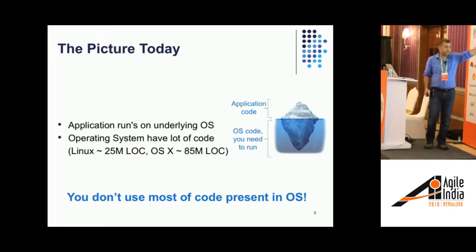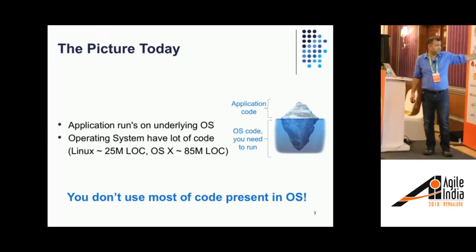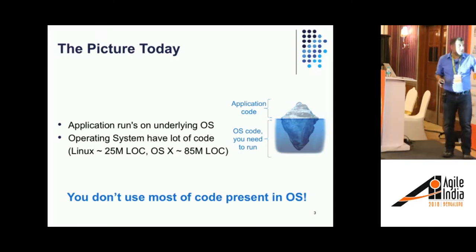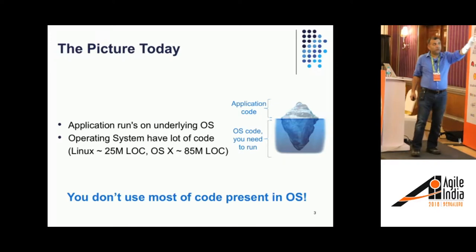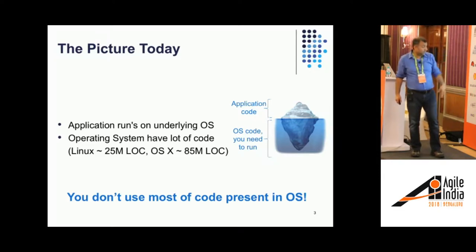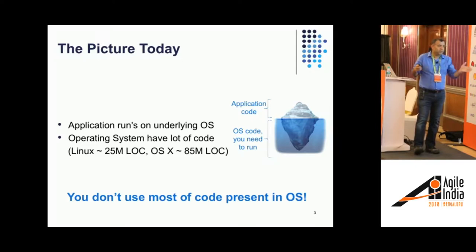Looking at the picture today: you have an application that runs on an operating system. Operating systems are usually a lot of lines of code — Windows is quite big, Linux OS as well — and then you have whole sorts of utilities. This picture somewhat resembles an iceberg. What you care about or what you see is just the tip. There is really big, bulky stuff beneath that you actually don't care about, and as a result you have a lot of stuff present in your production system that was not part of your application.